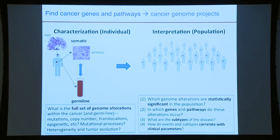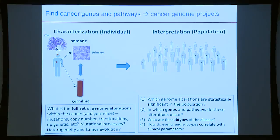How can we find those cancer genes and pathways? Cancer genome projects have emerged with two major tasks. One I call characterization: taking an individual patient, a blood sample representing the germline, a tumor sample containing the tumor genome, and maybe a metastasis or relapse — characterizing all of them to find the full set of genetic and epigenetic events from germline to primary to relapse. This includes copy number, translocations, rearrangements, point mutations, mutational processes active in the individual, and heterogeneity within the tumor.